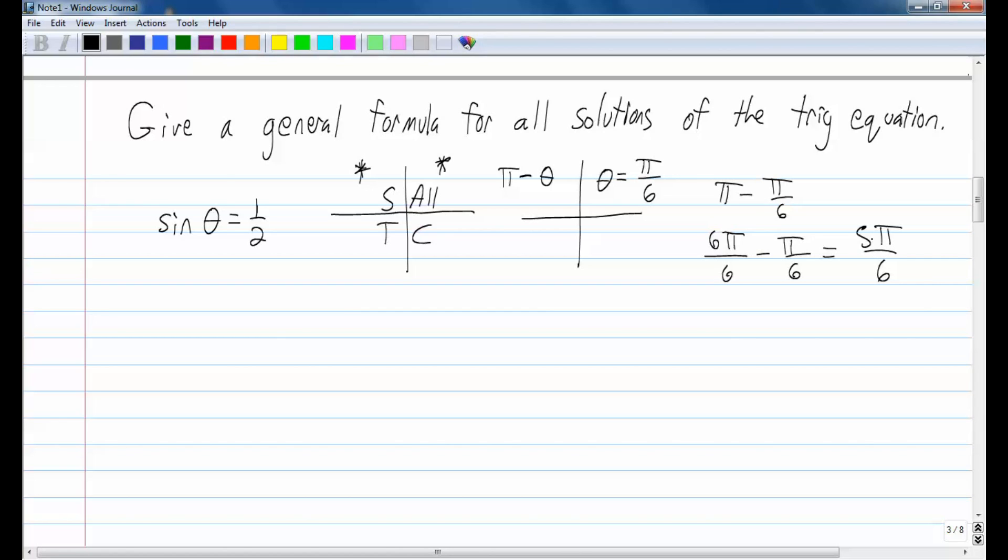Alright, so my two answers, if I didn't want a general formula, my two answers would just be pi over 6 and 5 pi over 6. But since I want a general formula, I'm going to say theta equals pi over 6 and theta equals 5 pi over 6.